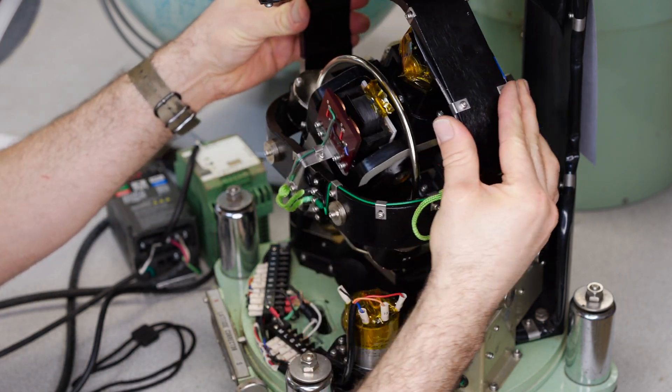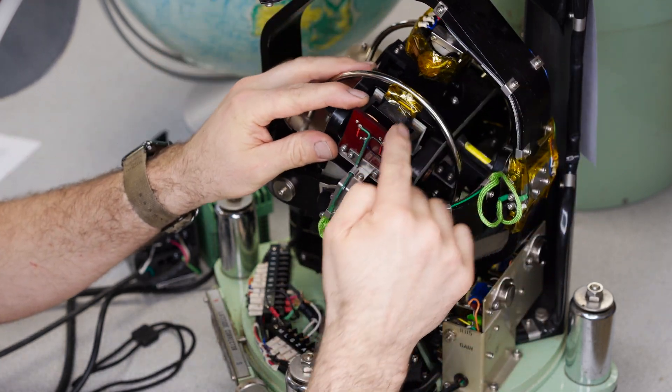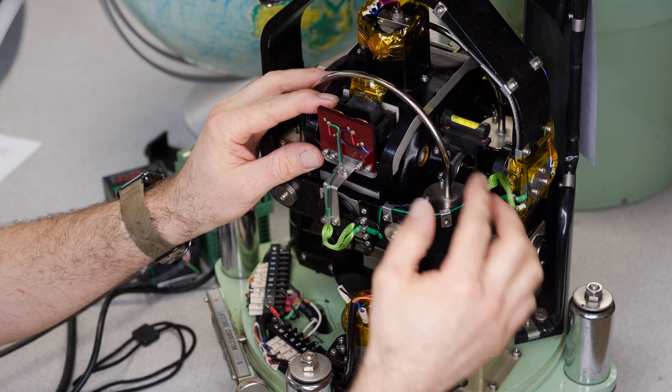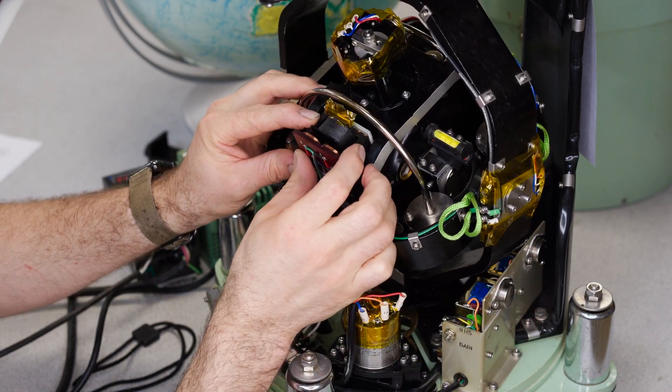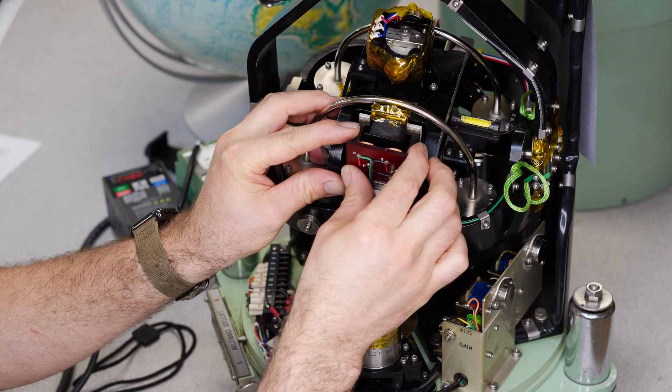carries the whole assembly. A follow-up transformer, an amplifier, and a motor form a servo system that drives the Phantom Element to follow the sensitive element and keeps it centered.